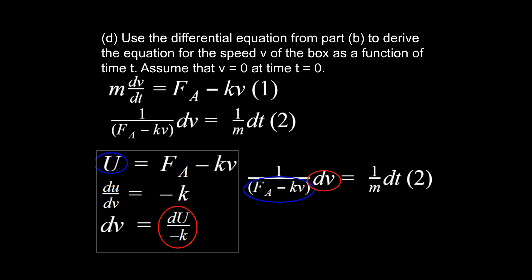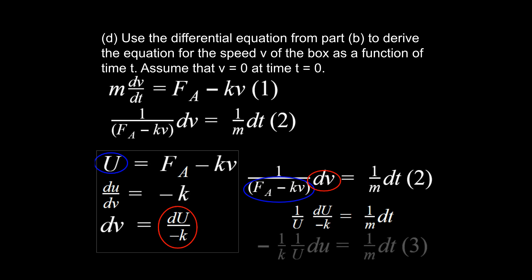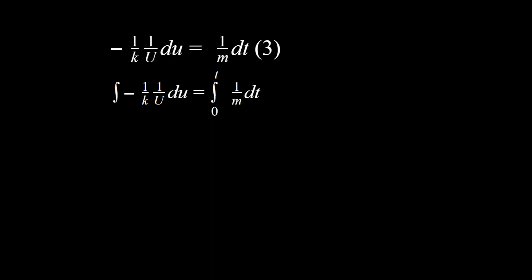We substitute in the expression for dv and also substitute u, which gives us (1/u) du over minus k equals (1/m) dt. We pull out the minus k from the denominator on the left-hand side to get this into a form that can be easily integrated — labeling that as equation three. Now we're ready to take the integral of both sides.